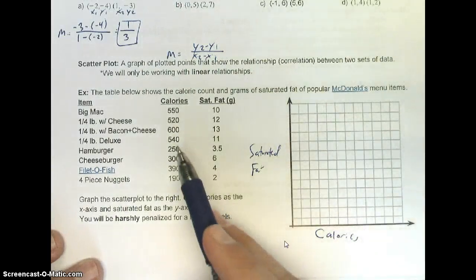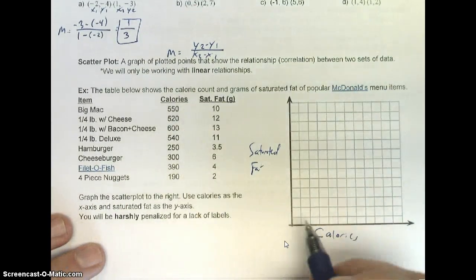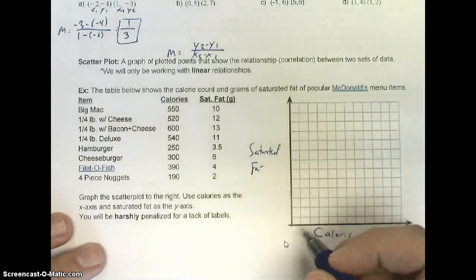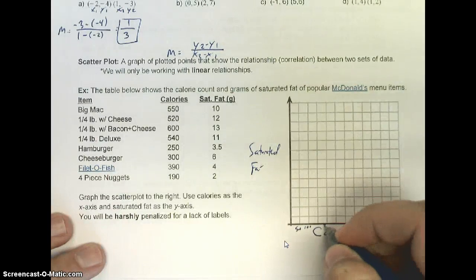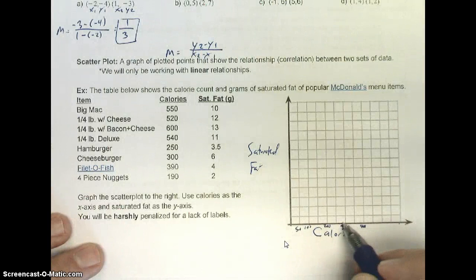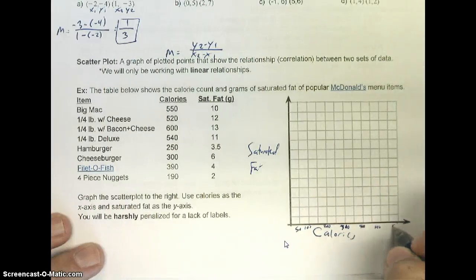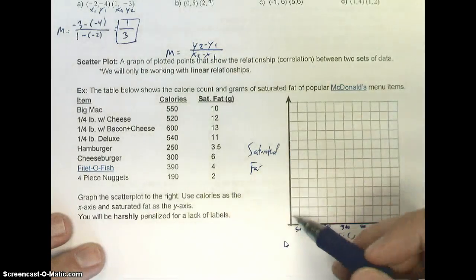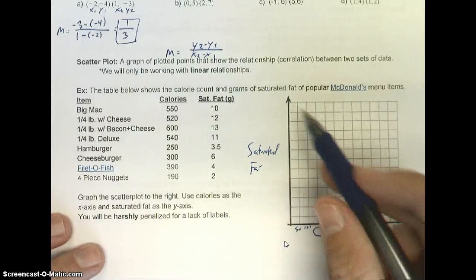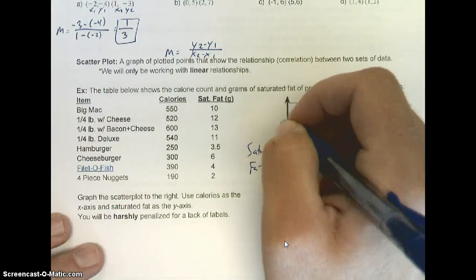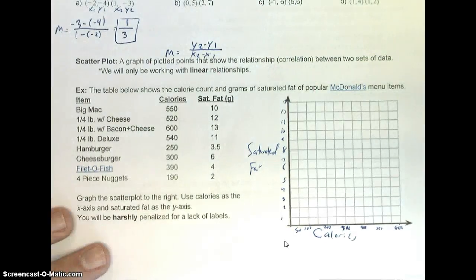For calories, it goes up to about 600 as my highest. I'm going to make each of these dashes worth roughly 50. So here's 50, 100, 200, 300, 400, 500, 600. As far as saturated fat goes, I have 2, 4, 6, 8, 10, 12 going up — 13 is my maximum. We'll make each of these 1. You want to always label stuff. So if you get to the keystone and you get something like this, you want to label everything properly so it all matches up.